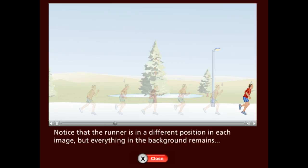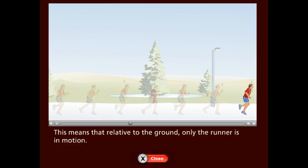Notice that the runner is in a different position in each image, but everything in the background remains in the same position. This means that relative to the ground, only the runner is in motion.